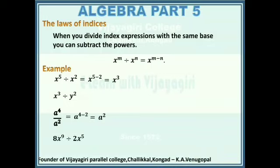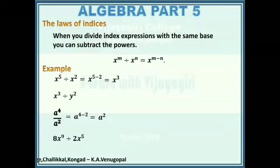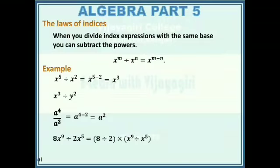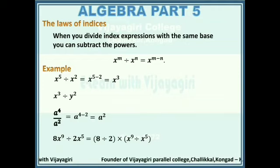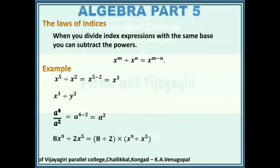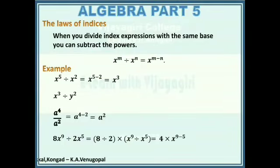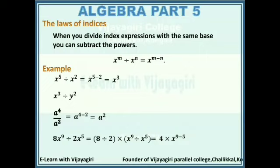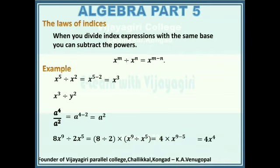8x to the power 9 divided by 2x to the power 5: here numbers and index expressions are coming together, so we do the calculation separately. 8 divided by 2 into x to the power 9 divided by x to the power 5. 8 by 2 is 4, and x to the power 9 divided by x to the power 5 can be written as x to the power 9 minus 5. This simplifies as 4x to the power 4.